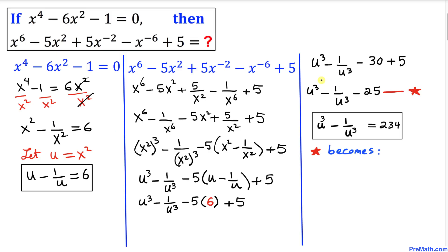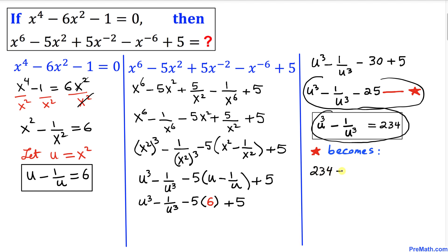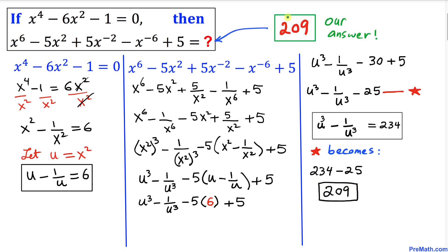Revisiting our expression (★): substituting u³ - 1/u³ = 234, we get 234 - 25 = 209. So the value of the expression turns out to be 209. Thanks for watching, and please don't forget to subscribe to my channel for more exciting videos. Bye!